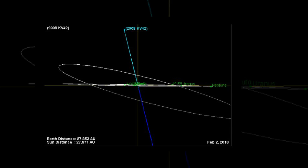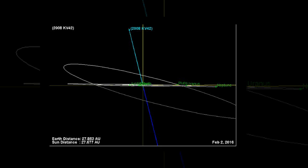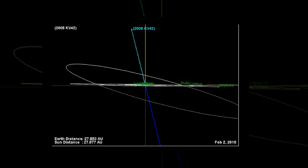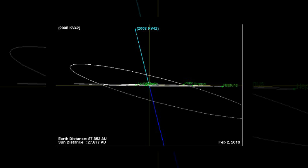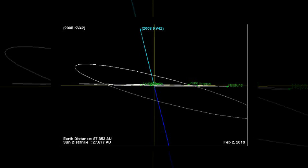Astronomers now believe something similar may have happened to NIKU, which has led to it adopting an orbit tilted by around 110 degrees to the orbital plane of the planets. The researchers found five other trans-Neptunian objects, such as one known as Drac, and centaurs that seem to share a common orbital plane with NIKU.